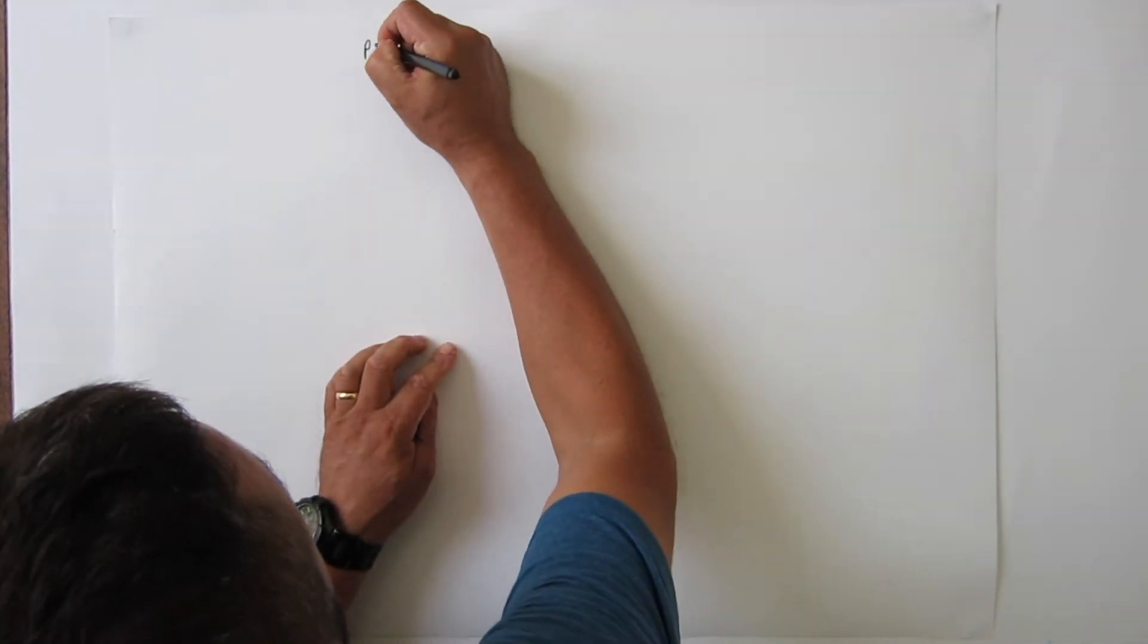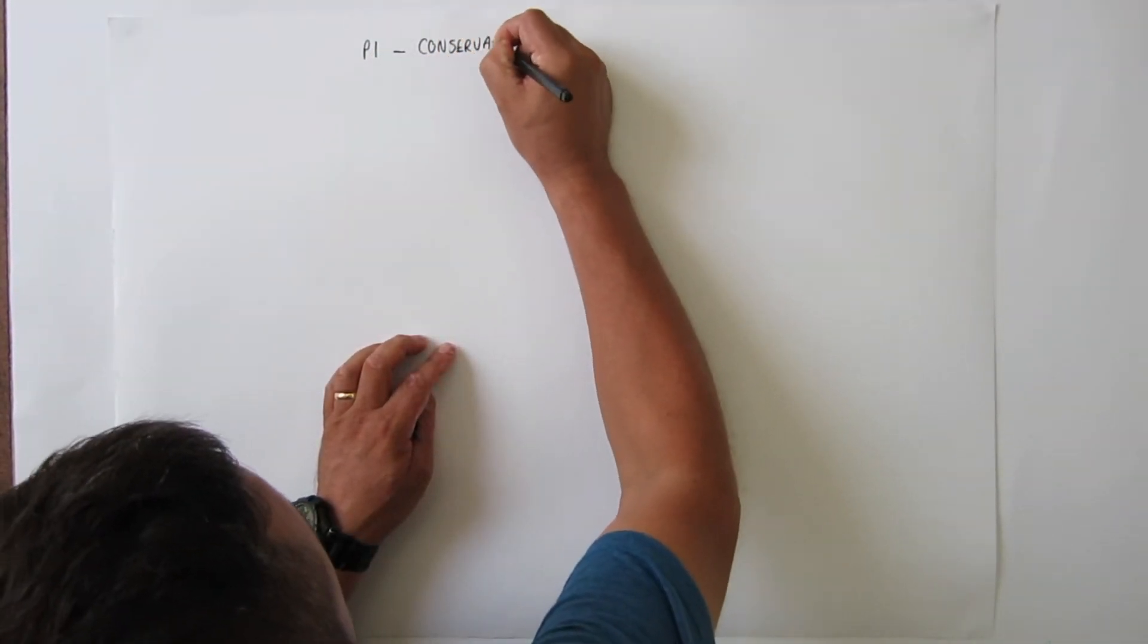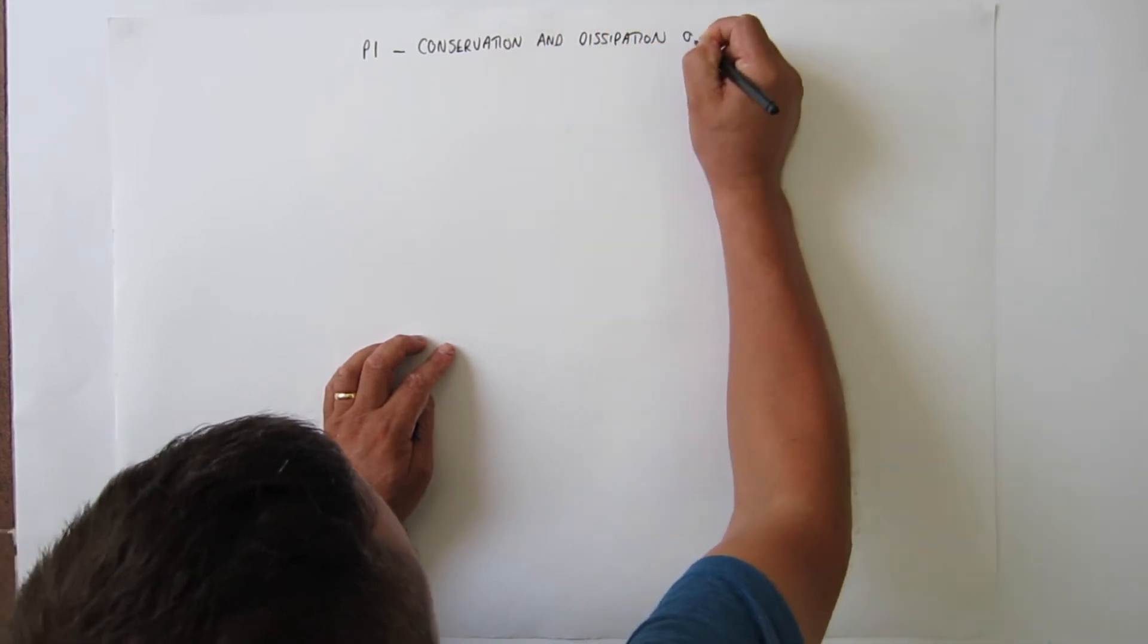In this short video I will walk you through how I would make a mind map for one of the GCSE topics. I'm going to start at the beginning with P1 conservation and dissipation of energy.